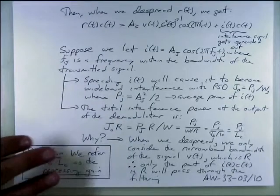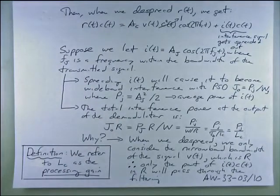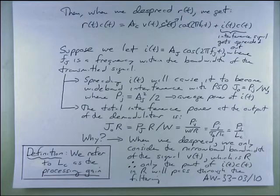Now, this is the question that Neil asked. What happens if I have a narrow band interferer? And the answer is, let's add one. Let's add I of T to the mix. So if we do that, when we de-spread, we have C of T multiplied by poor I of T. And what that does is essentially spreads out the interference.